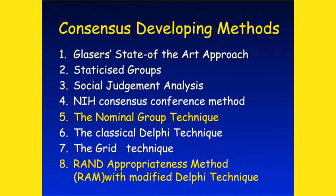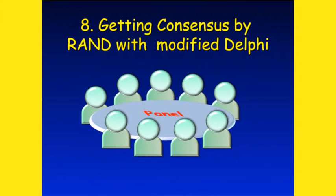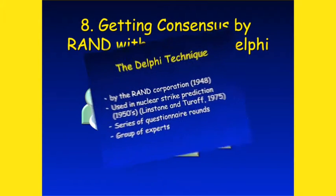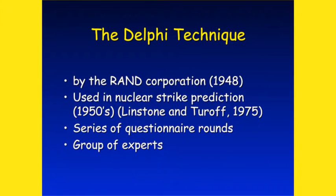There are eight methods for developing consensus. Most of them are effectively dead, except the nominal group technique, the classical and modified Delphi technique, and the RAND appropriateness method — those are the three methods currently in use. Even the NIH consensus conference method is not frequently used and is quite cumbersome. Despite the RAND appropriateness method being developed in the US, it is used more in Europe than in the US, where European communities have adopted it in their appropriateness methodology.